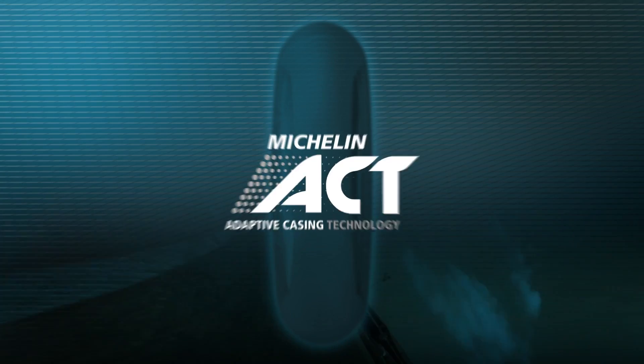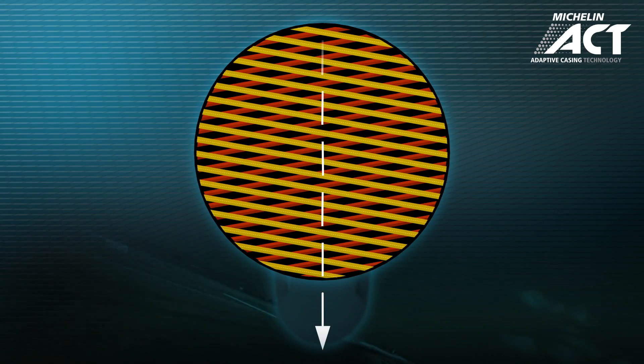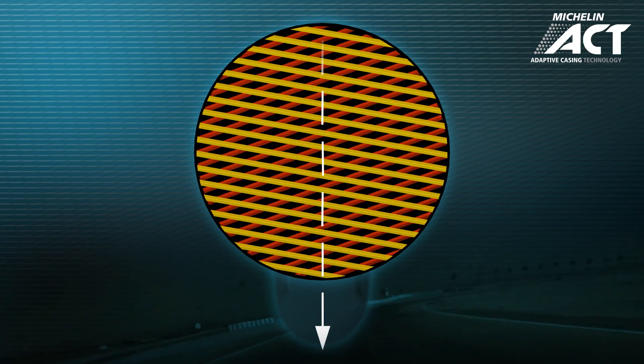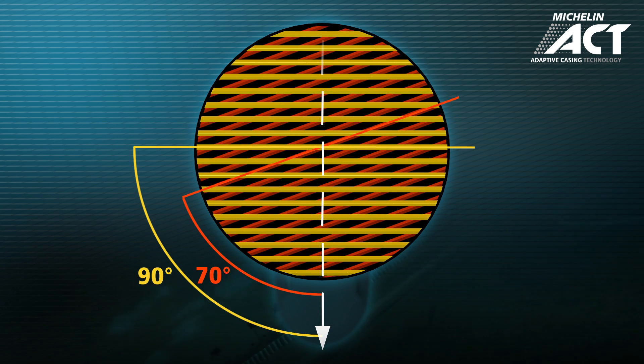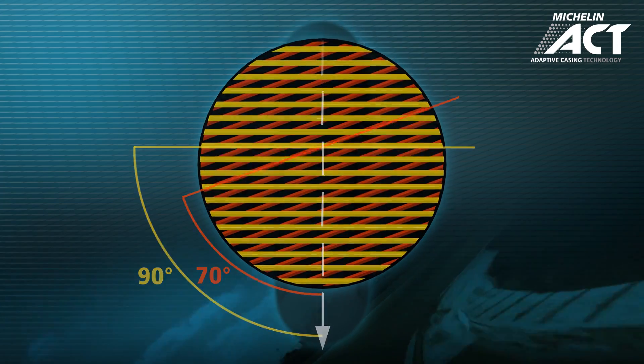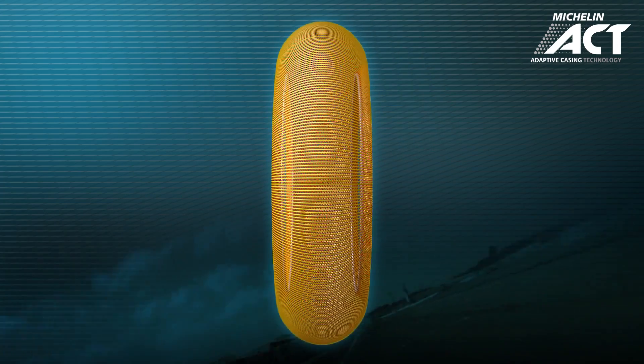With Michelin ACT, Adaptive Casing Technology, the plies are laid at different angles, but to the same side. One at minus 70 degrees and the other at minus 90 degrees. Because of the small difference between these two angles, the crown is not very rigid.